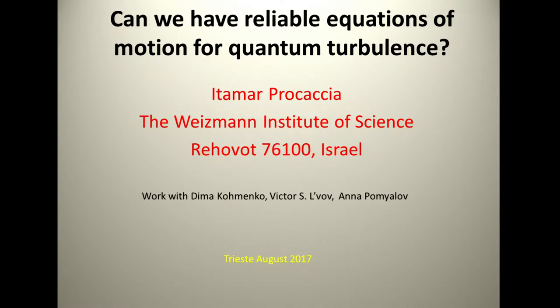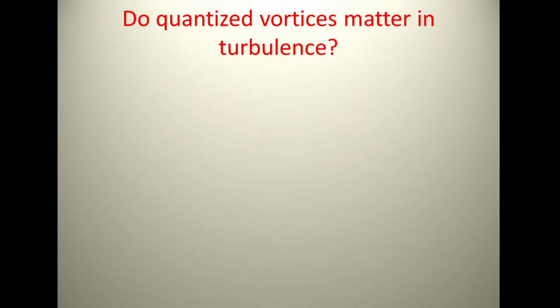These vortex lines are really objects that are there, cannot be destroyed. They go either in a loop or from one side of the box to the other. They can reconnect, they can collide and have all kinds of interactions. First question is, do the quantized vortices matter in turbulence?